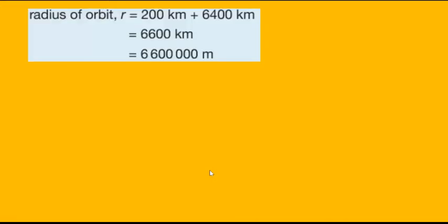Let's work it out. The radius of the orbit should be measured from the center of the Earth, and that is the radius of the Earth plus the distance of the satellite from the Earth. That is 200 kilometers plus 6400 kilometers, giving us 6600 kilometers, which can be converted to meters to give us 6.6 million meters.